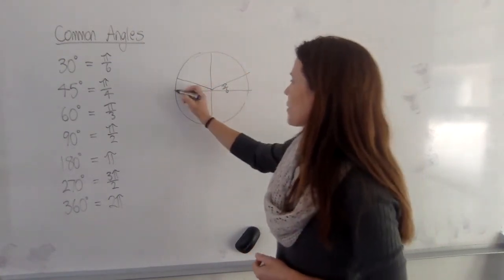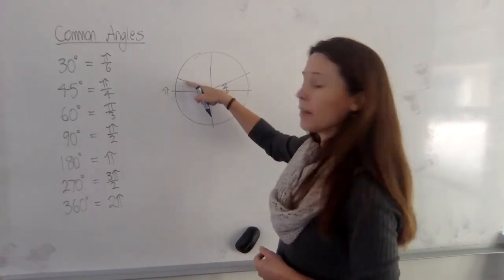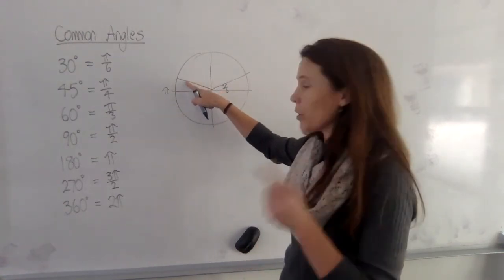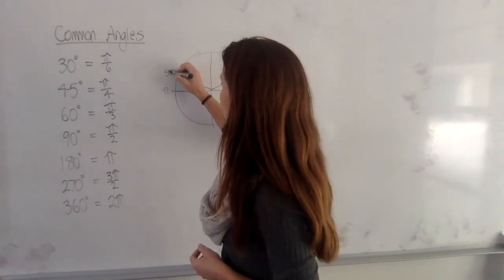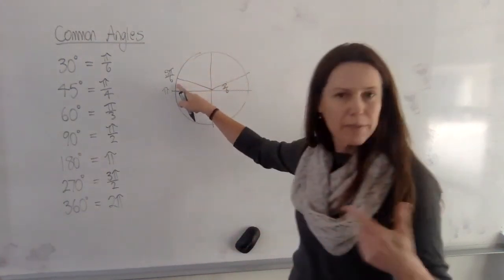Now, if this is pi all the way around to here, and we take 1 sixth of a pi off, we'll have 5 pi on 6, or 5 sixths of a pi, if you want to think of it that way.